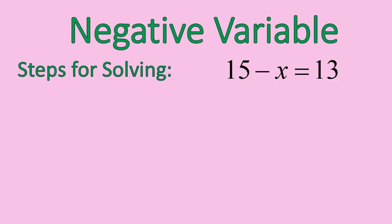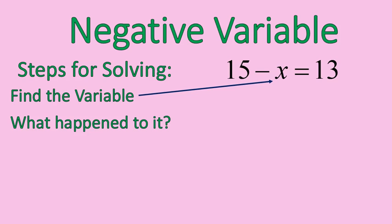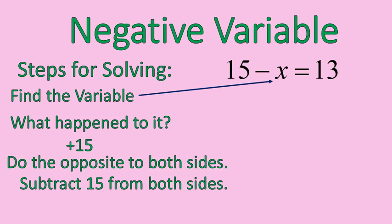Let me show you an example. If I have this, 15 minus x is equal to 13, I'm going to solve like normal. Where is my variable? It's right there. Now this is a little tricky because you have 15 minus x. So what's connected to my variable? And what's connected to my variable is a plus 15. That's a positive 15 that's connected to my variable. That's important.